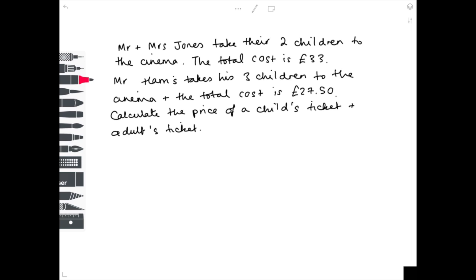In this example, we haven't been given the simultaneous equations; we have to work them out ourselves. Please don't panic. We can work it out as long as we read the question properly. So Mr and Mrs Jones take their two children to the cinema. The total cost is £33. Mr Harris takes his three children to the cinema, and the total cost is £27.50. Calculate the price of a child's ticket and an adult's ticket.